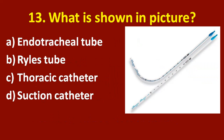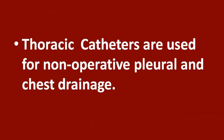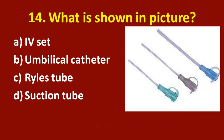Thirteenth question: what is shown in the picture? Option A: endotracheal tube. Option B: Ryle's tube. Option C: thoracic catheter. Option D: suction catheter. The correct answer is option C, thoracic catheter. Thoracic catheters are used for non-operative pleural and chest drainage.